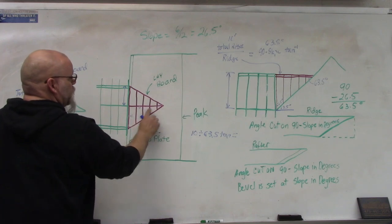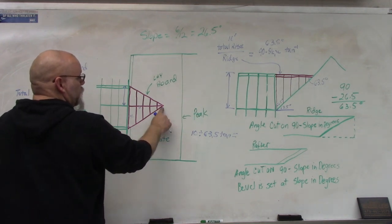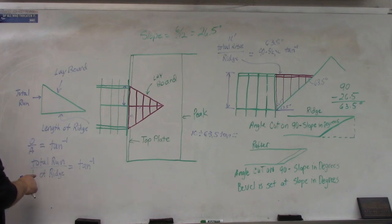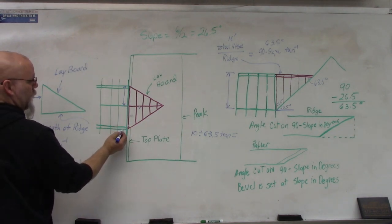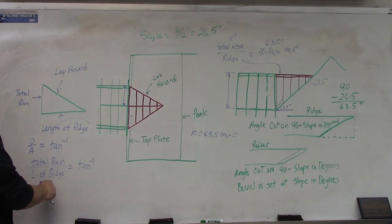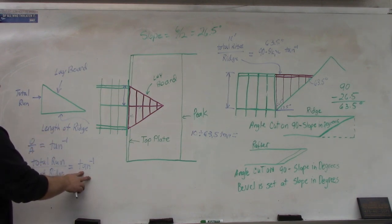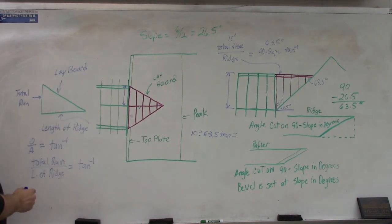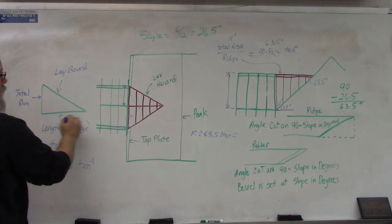The rest of these rafters are all going to sit on the lay board — you're going to nail this lay board to the roof. We can find how long the lay board is using a similar equation but with different numbers. This time we're going to use the total run, which is half the distance from the outside edge to the outside edge. The length of the ridge we just figured out will also be used, and we can find the angle to cut these rafters at.